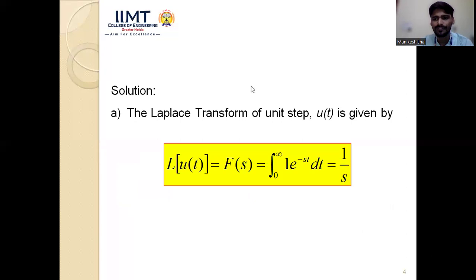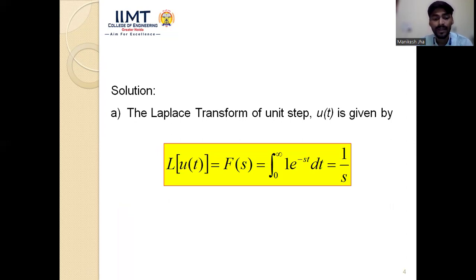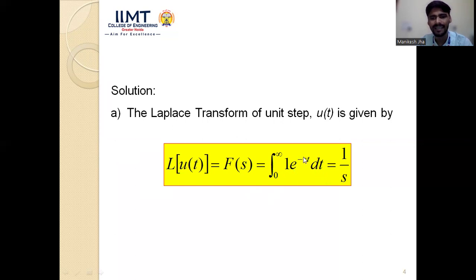For the unit step signal u(t): it equals 1 when t ≥ 0 and 0 when t < 0. The Laplace transform F(s) is the integral from 0 to infinity of 1 · e^(−st) dt, since u(t) = 1 for positive time. Evaluating this integral gives 1/s. So the Laplace transform of the unit step signal is 1/s.